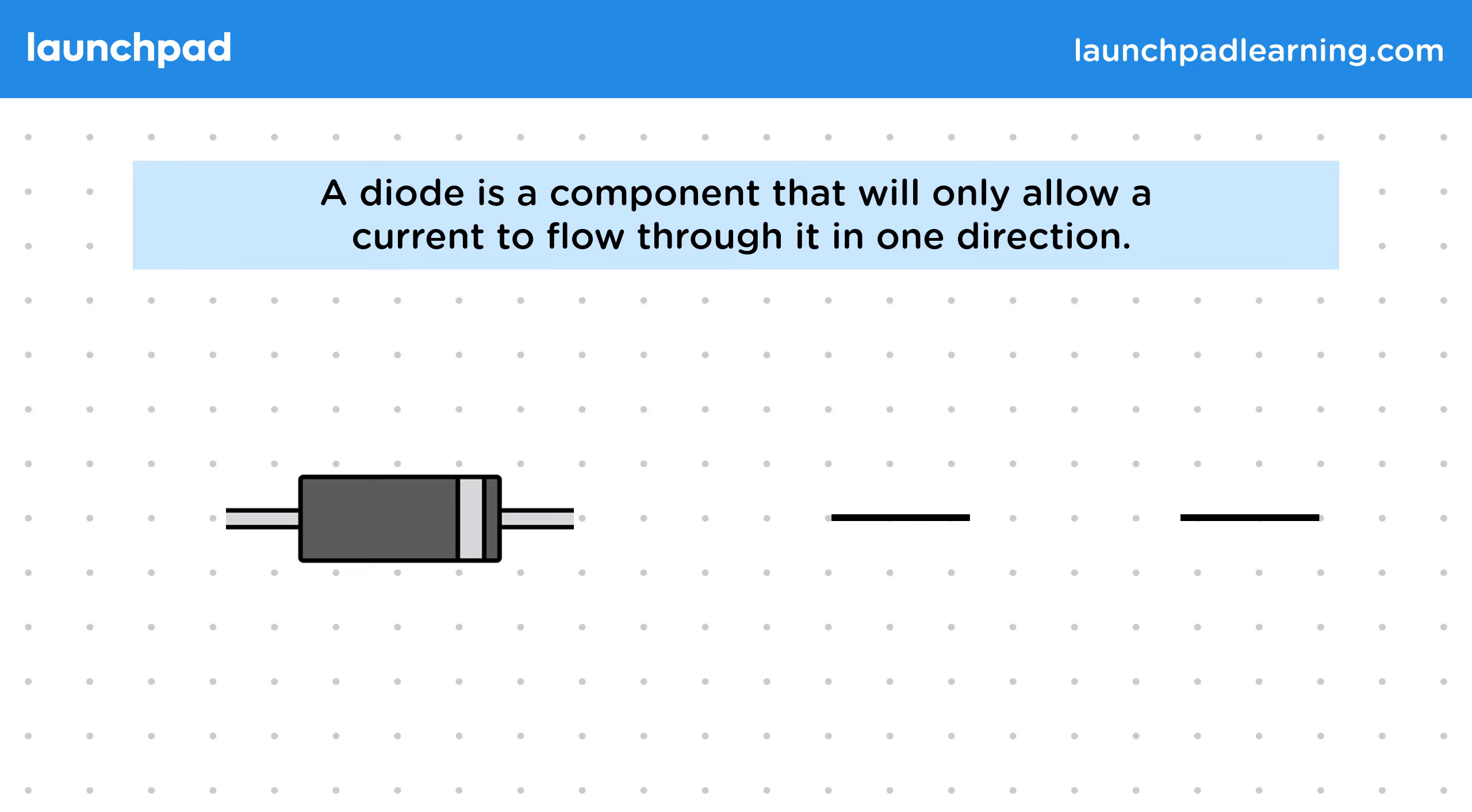When they are made, they usually have this grey stripe on them to indicate their direction. You don't need to be able to recognise a diode like this, but you need to be able to recognise and draw its circuit symbol.